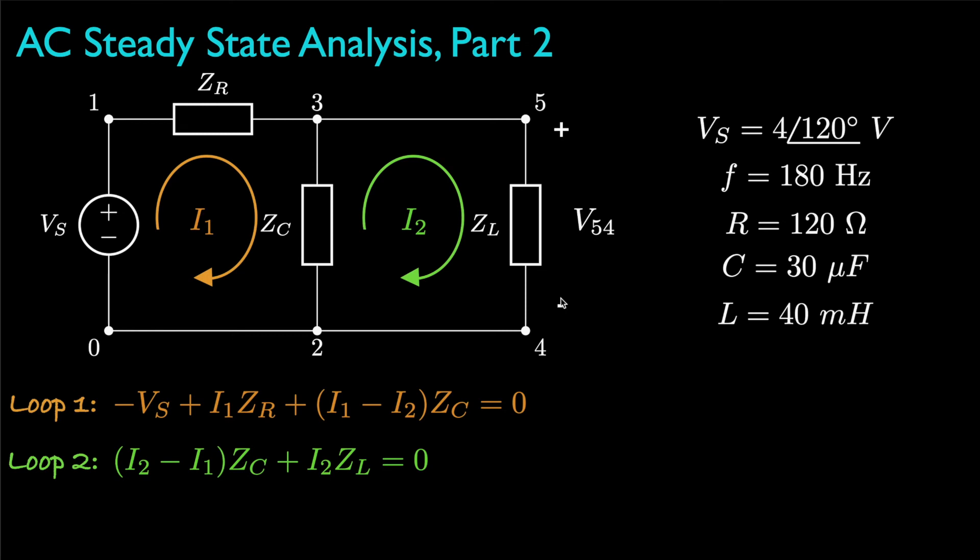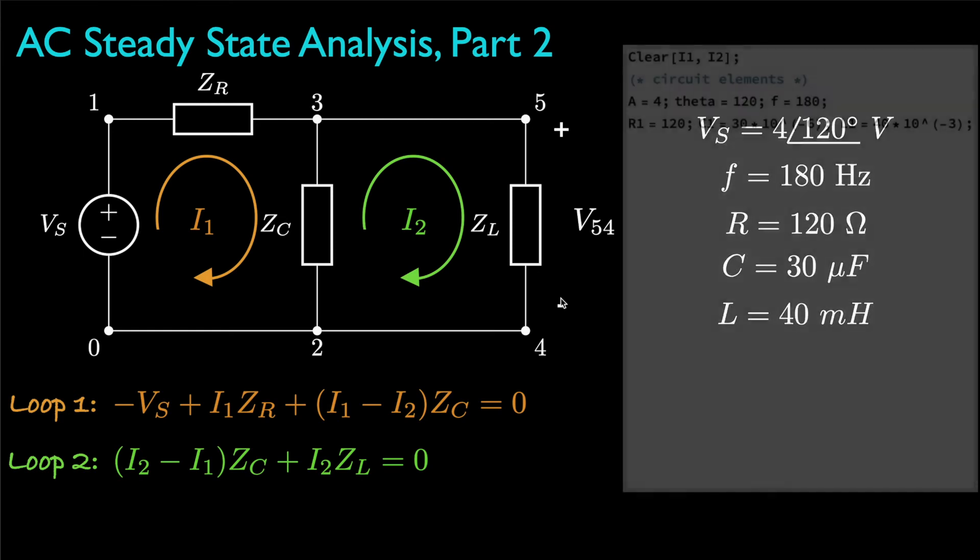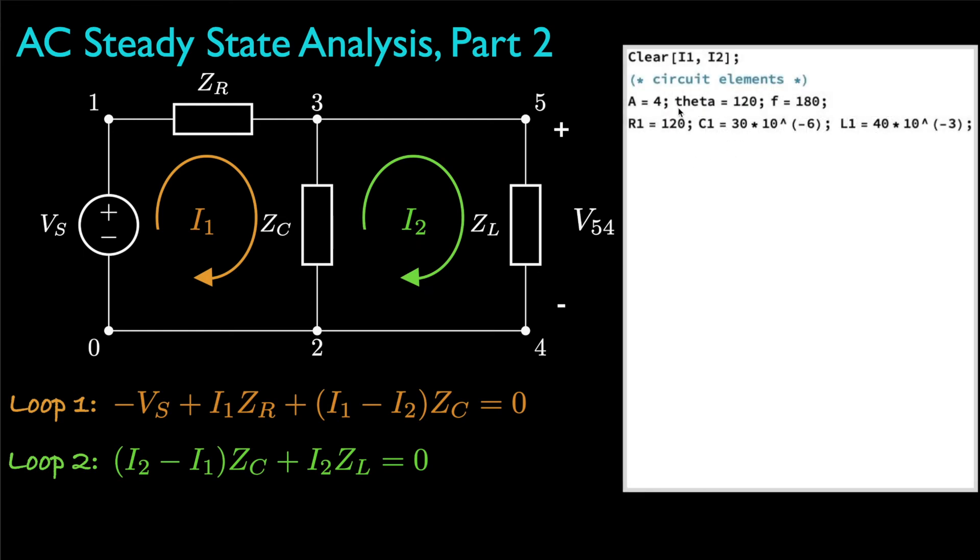Now, using these values and managing our calculations with Mathematica, we might start by defining the circuit element values, where the phase for the source is in degrees. Next, we could define the source voltage, where we convert the phase from degrees to radians for the exponential function, and in Mathematica, the square root of negative 1 is the capital symbol I.